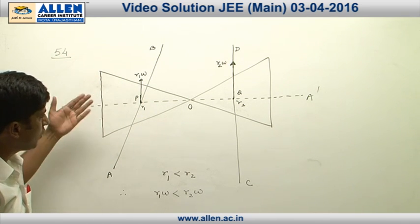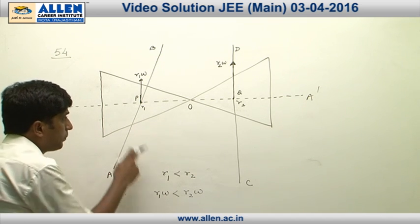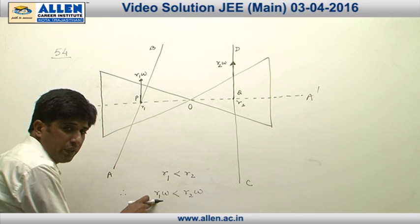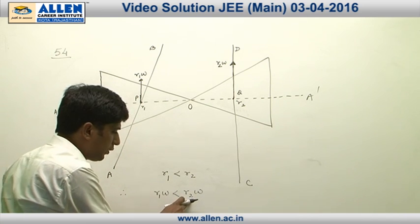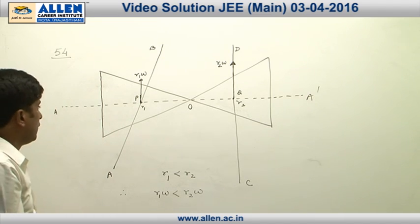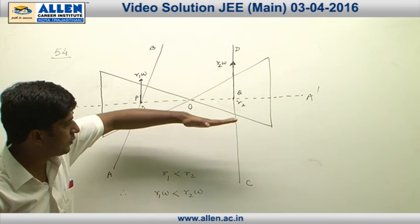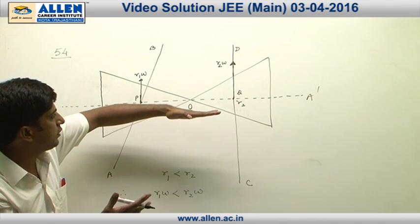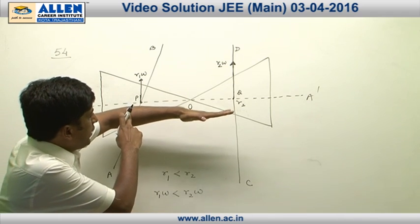As the roller moves forward, consider that the angular velocity of this roller is omega. Then we can say that velocity of point P, that is r1*omega, must be less than velocity of point Q, that is r2*omega.